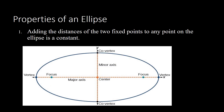Now let us discuss the properties of an ellipse. Based on the definition, when you add the distances from the two fixed points called foci to any point on the ellipse, the result is constant. As mentioned, the distance from one focus to a point plus the distance from the other focus to that same point will always be the same throughout the entire ellipse.